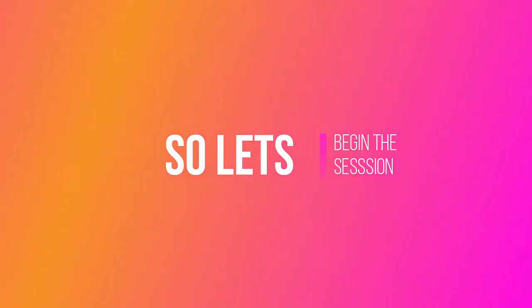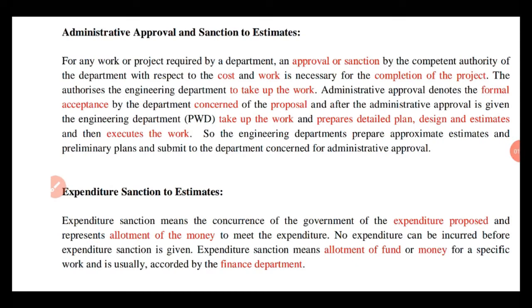First, administrative approval or sanction. For any work or project required by a department, an approval or sanction by a competent authority of the department with respect to cost and work is necessary for the completion of work. This authorizes the engineering department to take up the work.